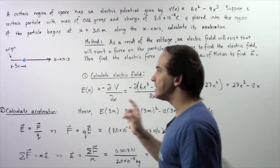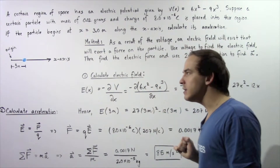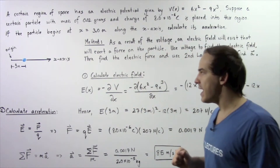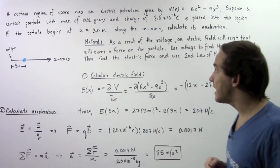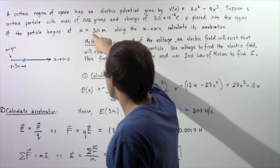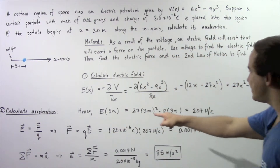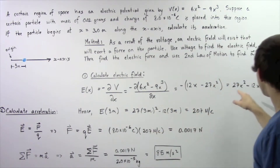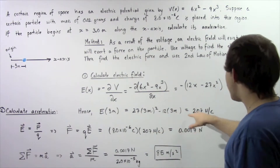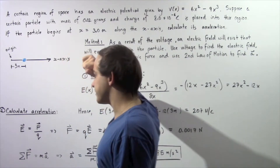If we know the x coordinate, we can find the electric field at that particular point in space along the x axis. We do know x — it is 3 meters. Plugging that into our equation, we get 27 multiplied by 3 squared, which is 9, minus 12 multiplied by 3, and that gives us 207 newtons per coulomb as the electric field at this particular point.